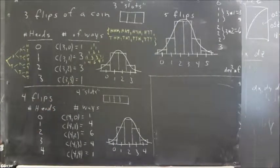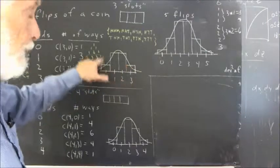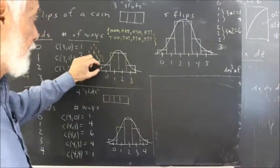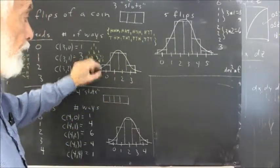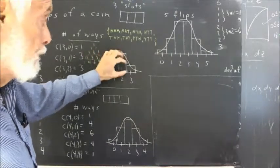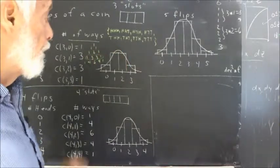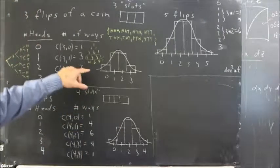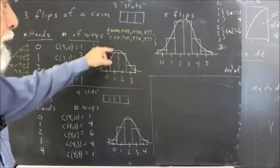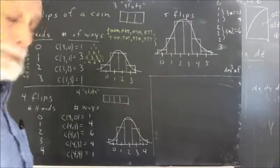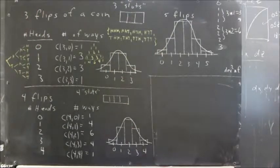And then we can make a histogram of that. Here's the histogram representing the one way to get no heads, the three ways to get one, the three ways to get two, and the one way to get three heads. I also observed that we can sketch a bell-shaped curve based on this distribution. And I'll see you next time.